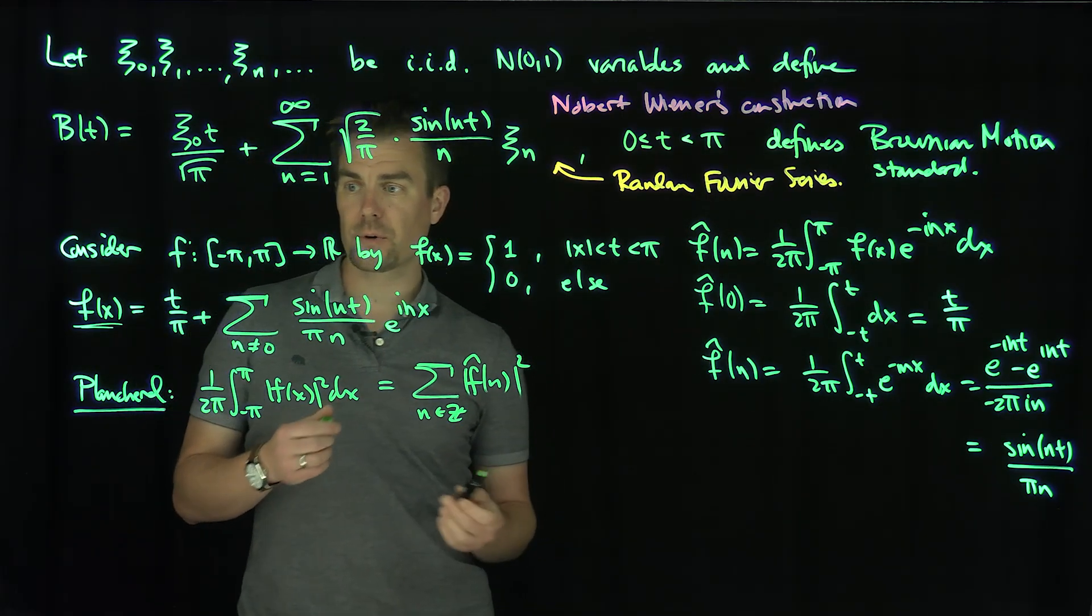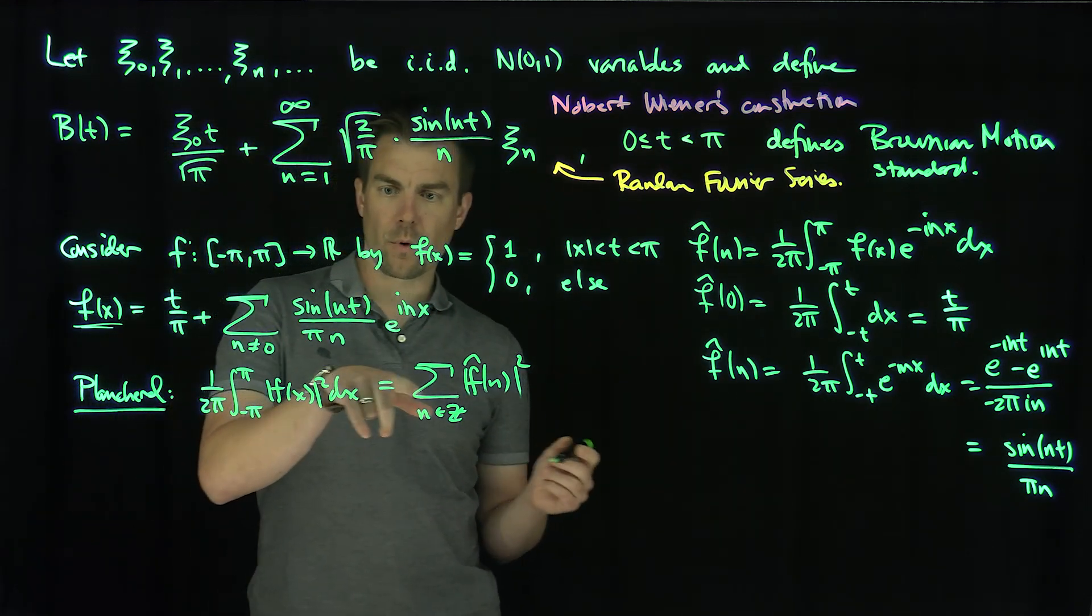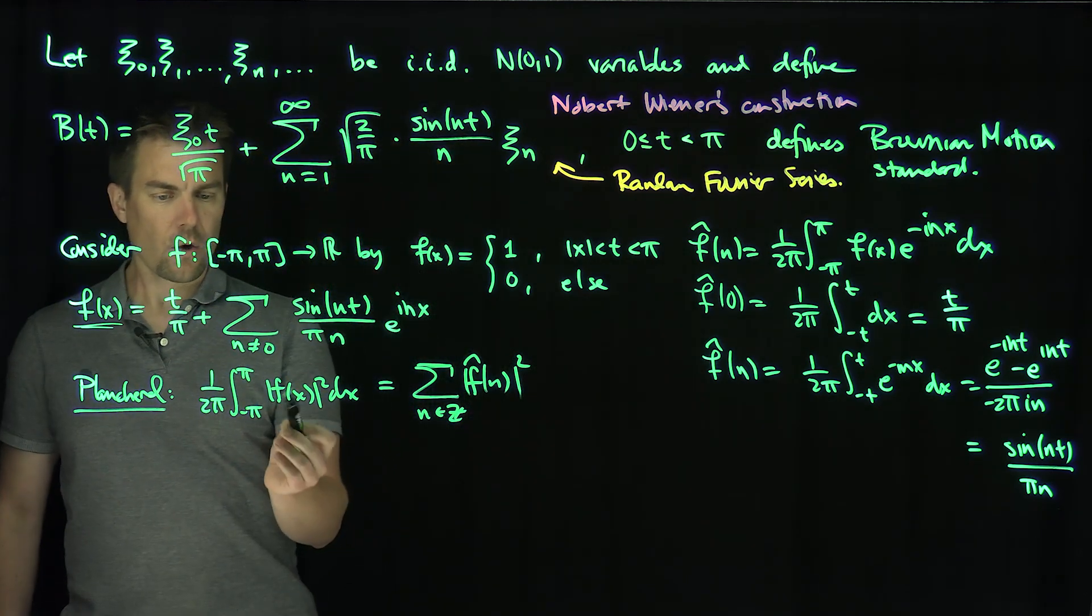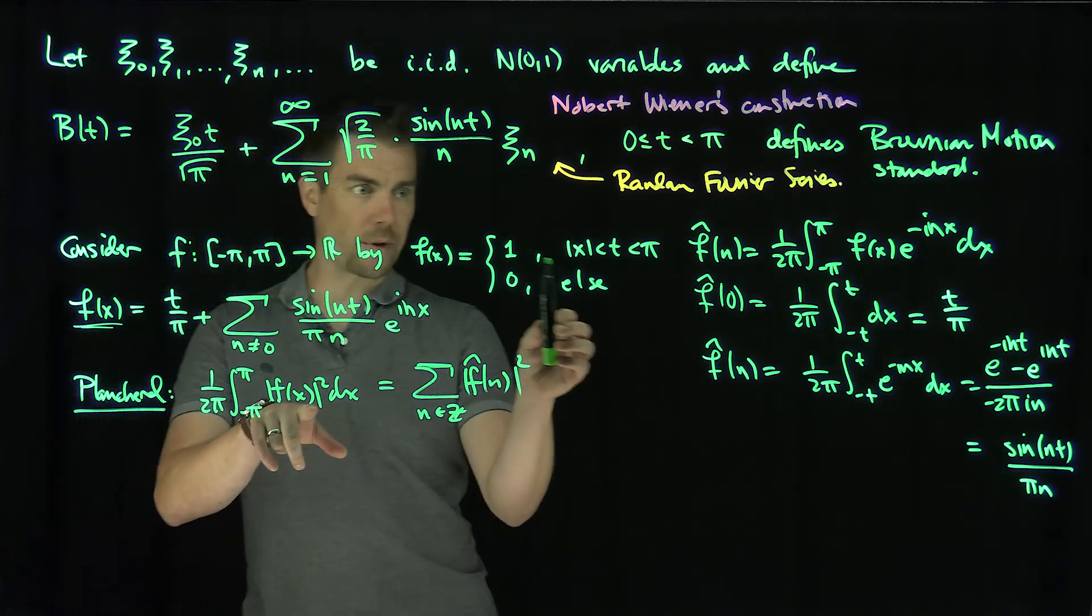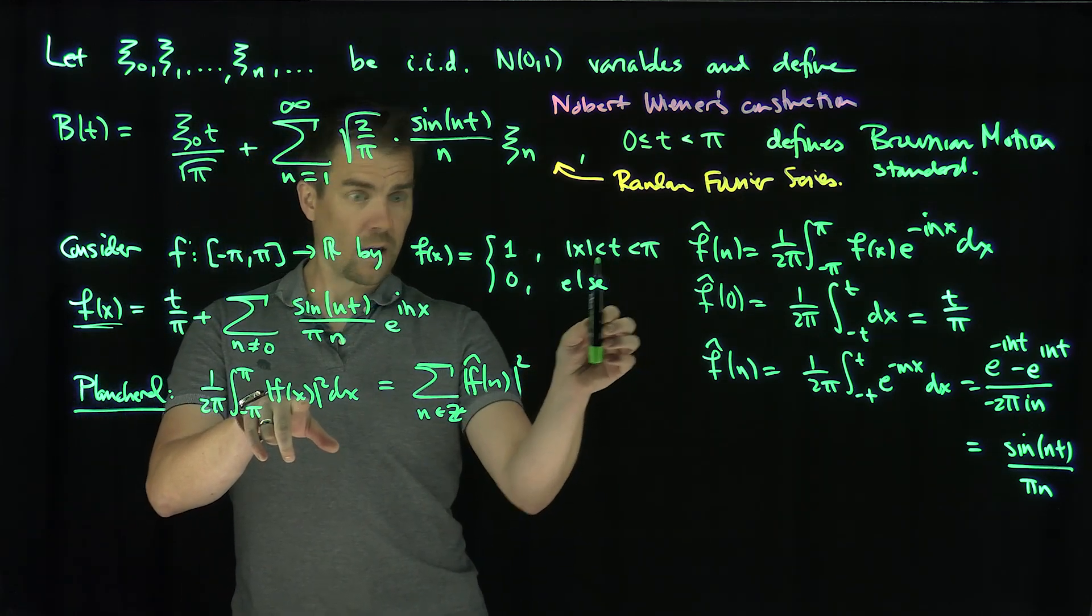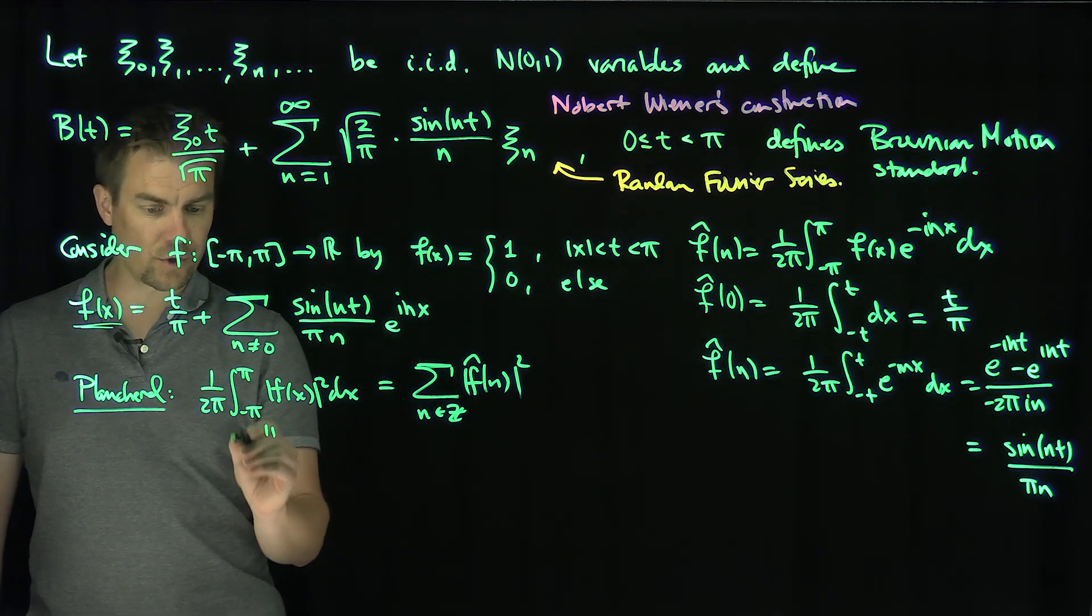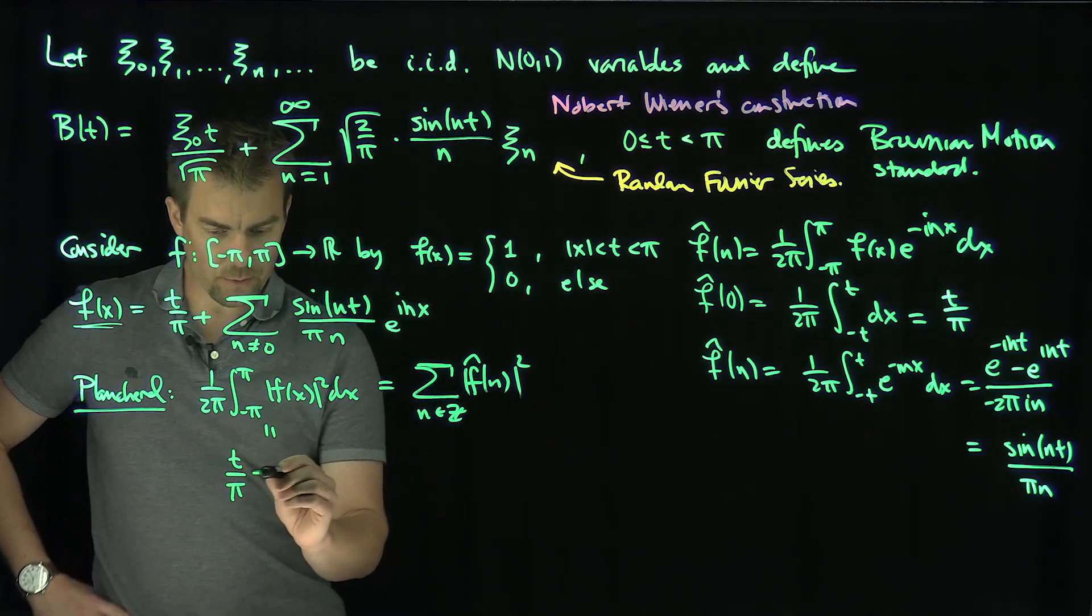And so in particular, if I use this Plancherel theorem, what can we conclude? On this function, what will Plancherel tell me? It will tell me, if I apply it to this function over here, well, what would the L² norm of this thing, of this function over here be squared? Well, it's just going to plug in one between -t and t. So this thing over here for us is going to be just t over π. So t over π is equal to what?